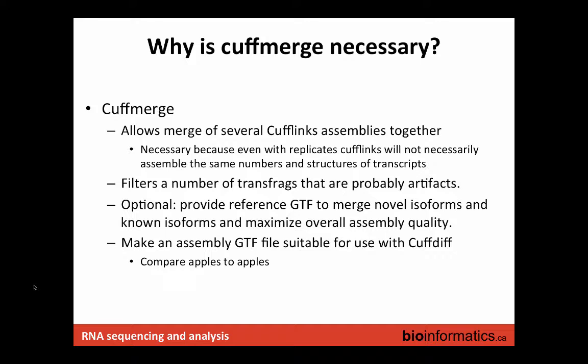CuffMerge also does a few other things — it filters out problematic transfrags. There are known issues where there'll be a huge spike in coverage, usually a mapping artifact where lots of alignments pool in one place, creating problems for CuffDiff and CuffLinks. You can also provide a reference GTF to merge the novel isoforms that CuffLinks predicts into the known isoforms. In the end you get an assembly GTF produced by CuffMerge that is suitable for use with CuffDiff, letting you compare apples to apples across all your samples.